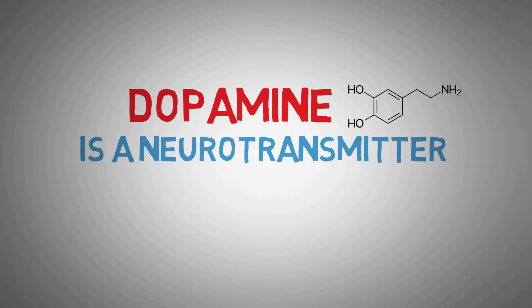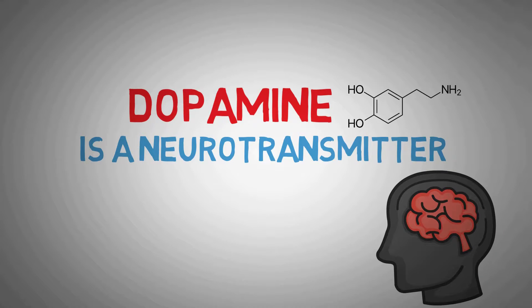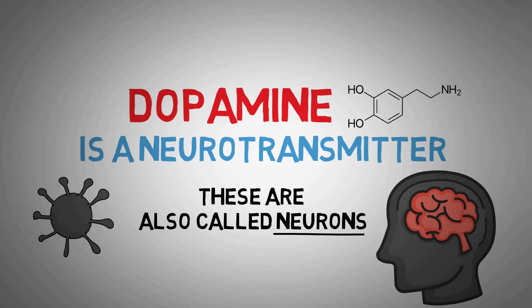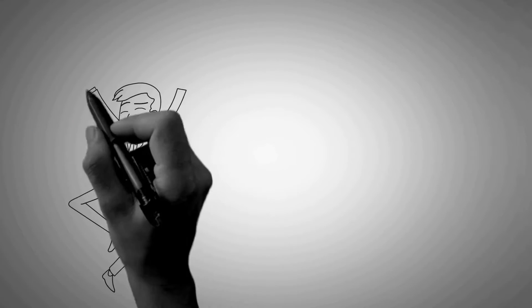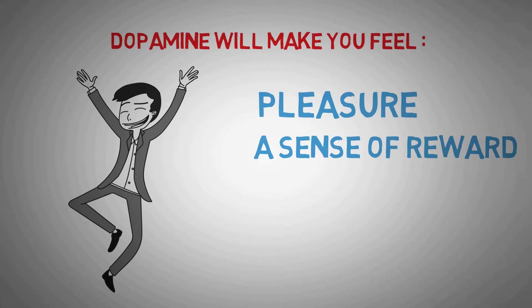Dopamine is a neurotransmitter and plays several key roles in the brain and body. It's one of those chemicals that is responsible for transmitting signals between the nerve cells in the brain, also called neurons. Dopamine is a feel-good hormone and is able to give you pleasure, a sense of reward, and therefore motivation to do something.